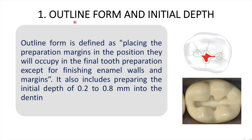Now, first of all, we will discuss about the outline form. What does exactly an outline mean? Outline means boundary or a gross plan showing the shape and size of something but not the details. Similarly, the outline form of tooth preparation, as seen in this image, is just an outline — we don't know the detailed features of this cavity. So, outline form is defined as placing the preparation margins in the position they will occupy in the final tooth preparation, except for finishing enamel walls and the margins. It also includes preparing the initial depth of 0.2 to 0.8 mm into the dentine.